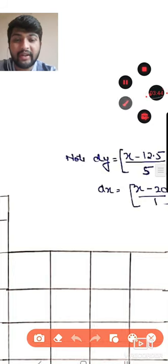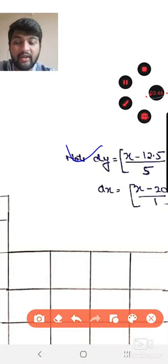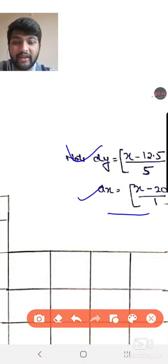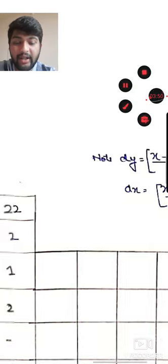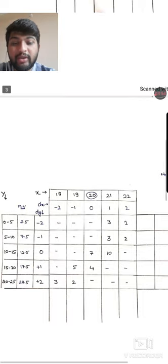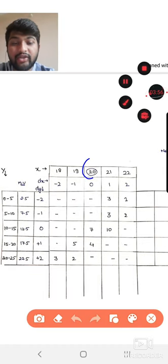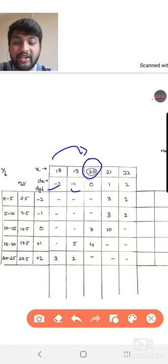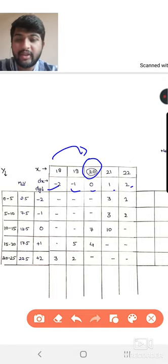dy = (Y minus 12.5) upon 5. Then dx value same, dx = (X minus 20) upon 1. Now you can see here, when we have X series, we can assume 20. That means 18 minus 20. How much is it? Minus 2, minus 1, 0, 1 and 2. Because we already have dx value, it is in very reduced form.